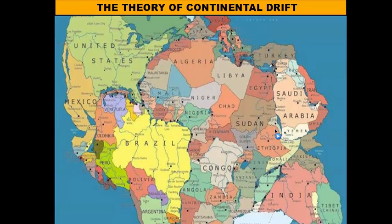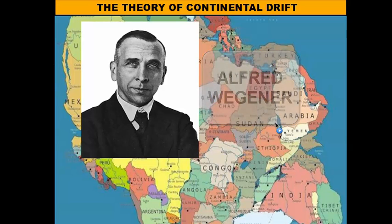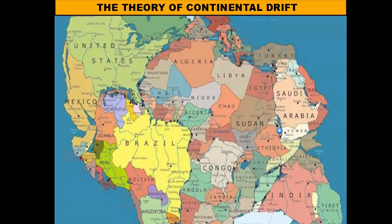Well, somebody did that in the early 1900s, and that's this man here. His name is Alfred Wegener, a German scientist, and he made this preposterous claim about the supercontinent in the early 1900s. So what we're going to do in this lesson is talk about the evidence that he mounted to support this outrageous and extreme idea.